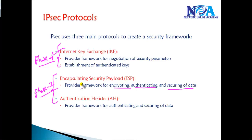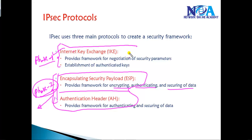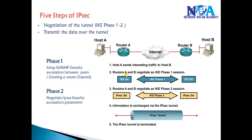Phase 2 is responsible for actually encrypting, authenticating, and securing data. The actual transmission and application of security policies happens in Phase 2. These two protocols — ESP and Authentication Header — are the major ones responsible for this. We can use either one depending on the configuration. Phase 1 helps build a secure channel between the two endpoints.